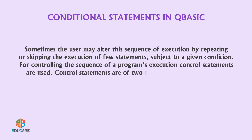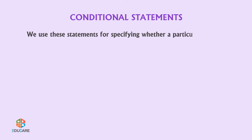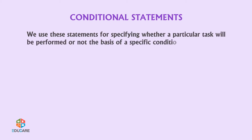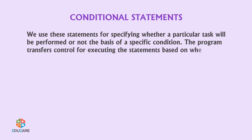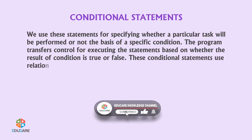Control statements are of two types: loops and conditional statements. We use conditional statements for specifying whether a particular task will be performed or not on the basis of a specific condition. The program transfers control for executing the statements based on whether the result of the condition is true or false. These conditional statements use relational operators.